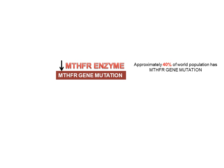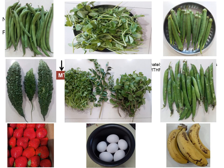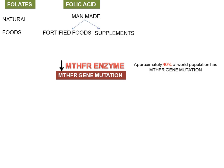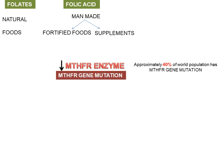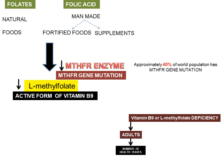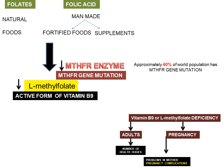These 40 percent of people who have MTHFR gene mutation will produce less MTHFR enzyme. So even if they eat folate-rich foods like green leafy vegetables, strawberries, and eggs, or take folic acid fortified foods or folic acid supplements, there is still less MTHFR enzyme due to the mutation. This results in less L-methylfolate being formed — causing L-methylfolate deficiency. This deficiency causes numerous health issues in individuals, and during pregnancy it causes pregnancy complications and birth defects in the fetus.